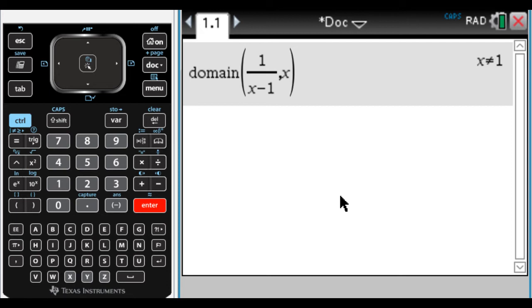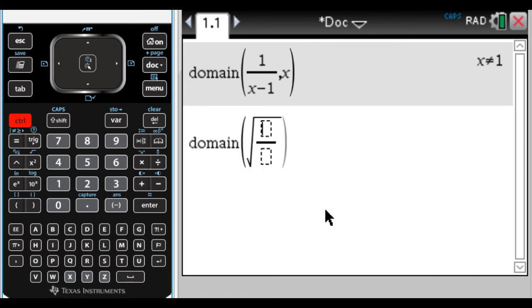Another way of accessing the function is to just type it in, which is really fast if you're on a computer, but not so fast on the handheld. So say I want the domain of the square root of x plus 2 over x minus 5.